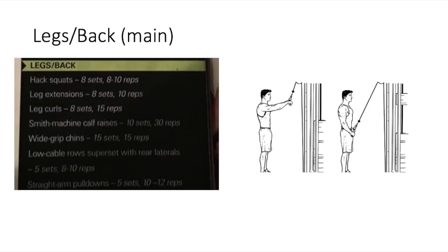Moving on to the last and final workout, this is his main routine for legs and back. Starts off with hack squats, eight sets of eight to ten repetitions, moves on to leg extensions, eight sets of 10 repetitions, moves on to leg curls, eight sets of 15 reps, then moves on to Smith machine calf raises, 10 sets of 30 repetitions, moves on to wide grip chins, 15 sets of 15 reps.